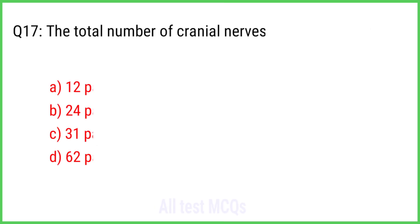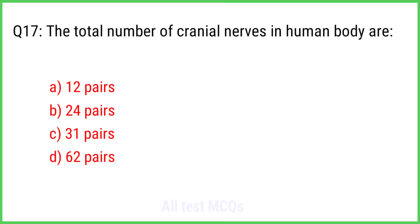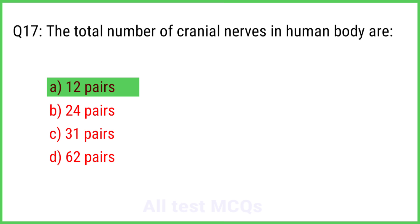Question No. 17. The total number of cranial nerves in the human body are? The right answer is Option A: 12 pairs.